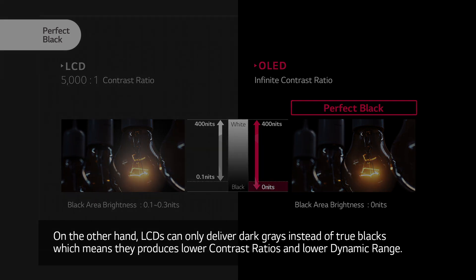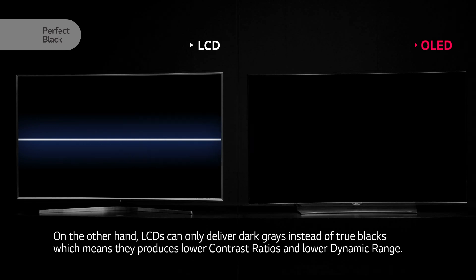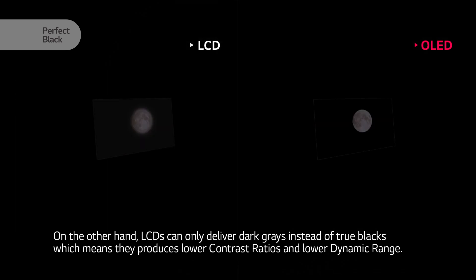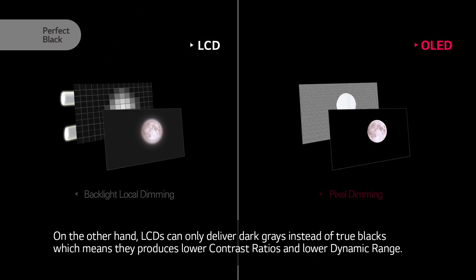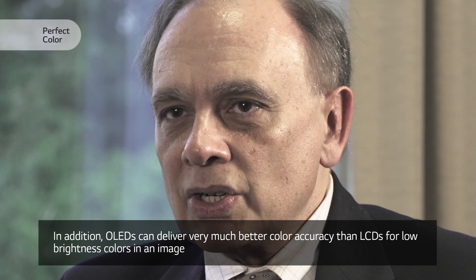On the other hand, LCDs can only deliver dark grays instead of true blacks, which means they produce lower contrast ratios and lower dynamic range.